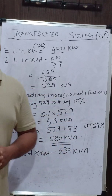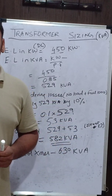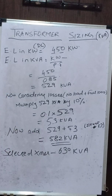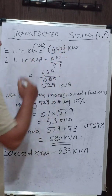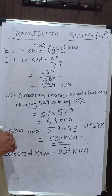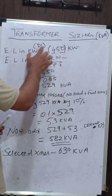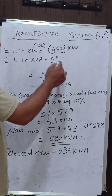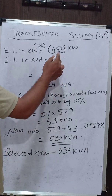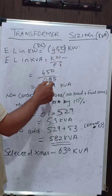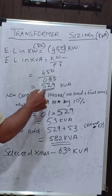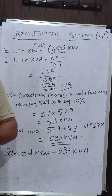The final electrical load should be a demand load, not a connected load. Based on the calculated demand load — say we reach a value of 450 kilowatt for the residential building — we first need to convert this kilowatt into kVA. To convert kilowatt to kVA, divide kilowatt by the power factor. Dividing 450 kW by a power factor of 0.85 (at the transformer side), the total kVA comes out to 529 kVA. This is your demand kVA — the requirement of all electrical loads in the building.